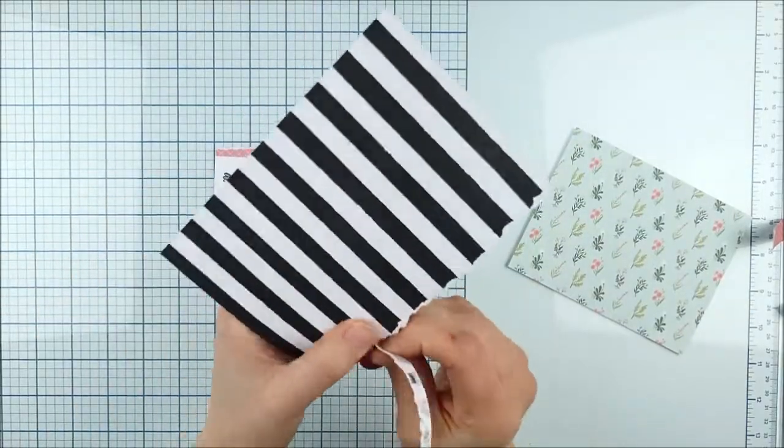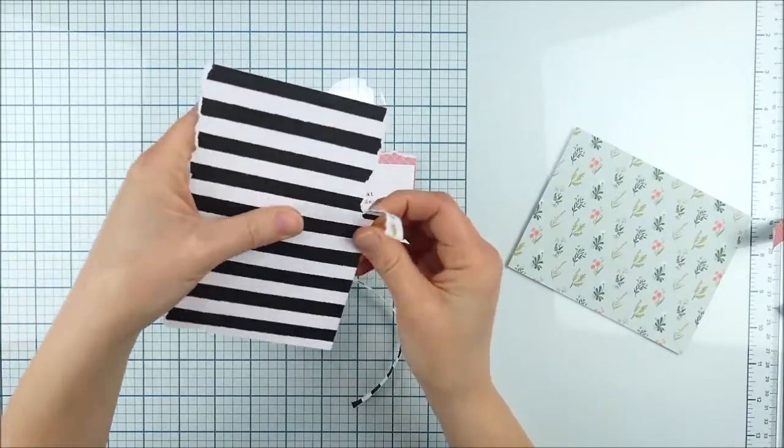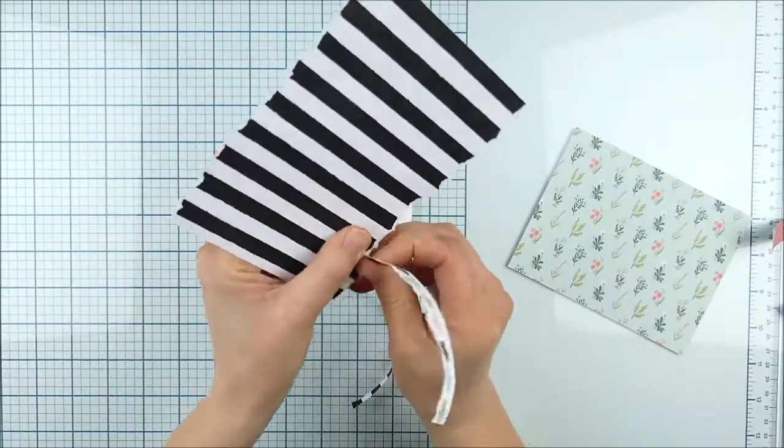So once I added the torn edge on both sides of the pink, it was pretty obviously a little too short, but all you have to do is quickly cut it in half, and then you can just adhere it to both sides.